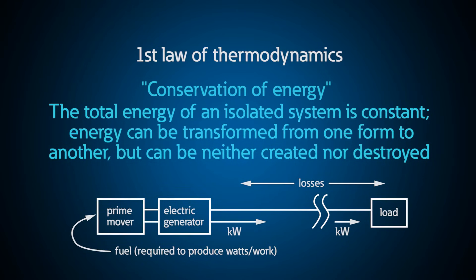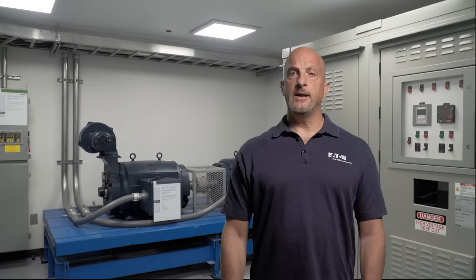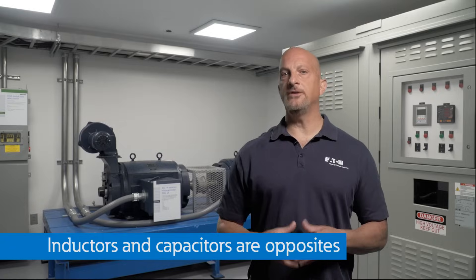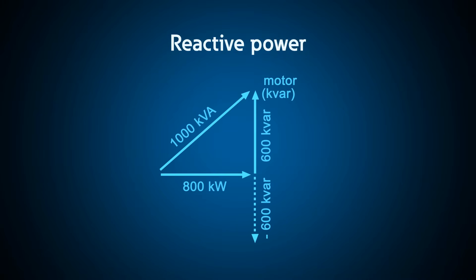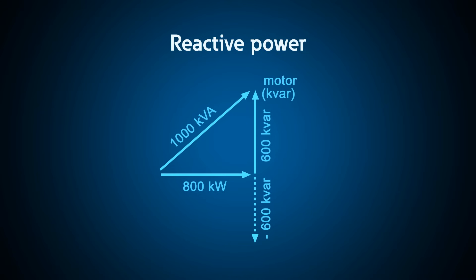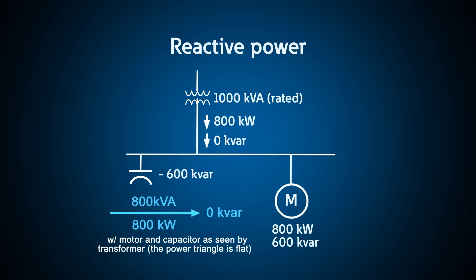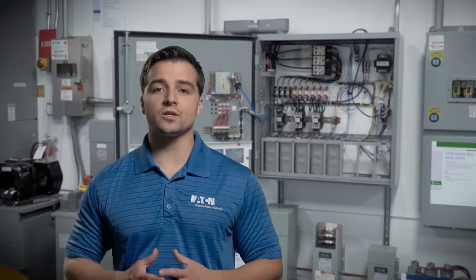Watts are real power and must be created by a source of power, like a generator. Energy in the form of mechanical power or fuel is used to maintain conservation of energy. Since magnetic or reactive power requires no energy to be created, we call it imaginary power. In electrical systems, the opposite of an inductor is a capacitor. To compensate for inductive load like a motor, a capacitor actually draws current 180 degrees out of phase and therefore is said to be a VAR generator and compensates for the VARs required by the motor. Now let's take a look at real measurements and see how VARs behave on power systems.